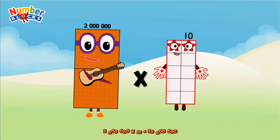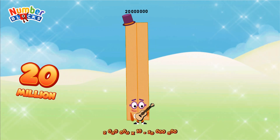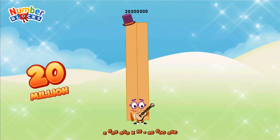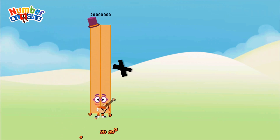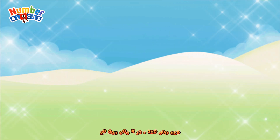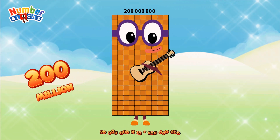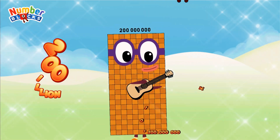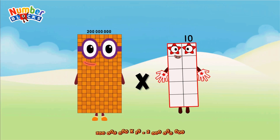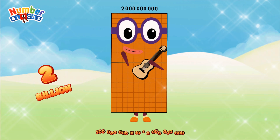2,000,000 multiplied by 10 equals 20,000,000. 20,000,000 multiplied by 10 equals 200,000,000. 200,000,000 multiplied by 10 equals 2,000,000,000.